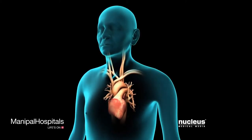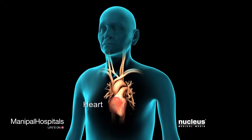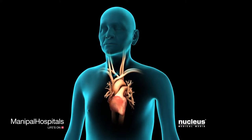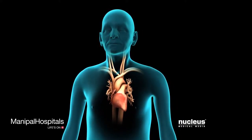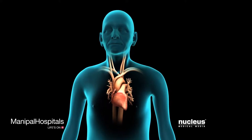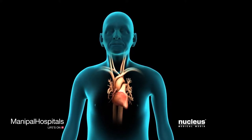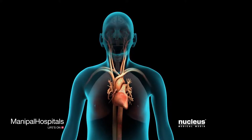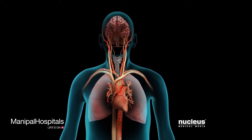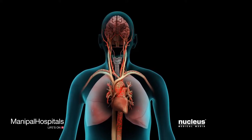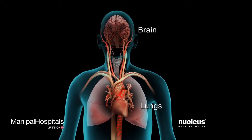Depending on activity level, the heart beats about 60 to 100 times per minute. It may be higher during exercise or lower at rest. A normal heart rate and rhythm ensures the delivery of oxygen-rich blood to all of the body's organs, such as the brain and lungs.